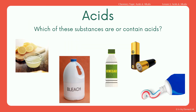In these images, you've got some different substances. Which of these contain acids or which of them are acids? So lemon juice, bleach, vinegar, a battery, and some toothpaste. The lemon, the vinegar, and the batteries all contain acids. Lemon is a citrus fruit and they are traditionally acidic. Vinegar is a weak acid, and batteries contain acid inside them. The bleach and toothpaste are alkaline.